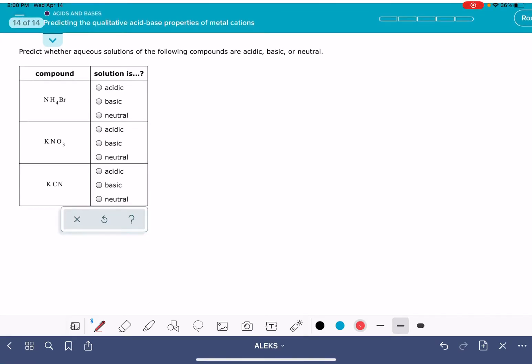In this video, I'm going to show you how to solve the Alex problem called predicting the qualitative acid-base properties of metal cations. In this problem, you're going to be given the formulas of three ionic compounds, and you're going to be asked to predict whether the compound would produce an acidic solution, a basic solution, or a neutral solution.